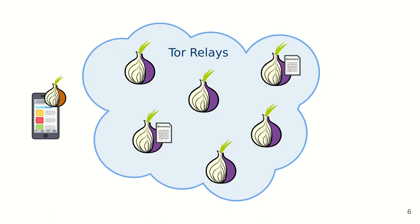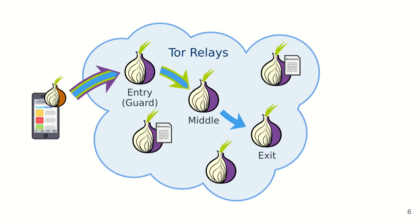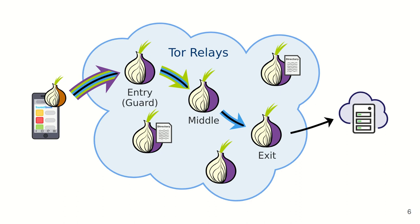When a client running a Tor proxy connects to the Tor network, it builds multi-hop circuits through relays on the network. As Tor usually uses three-hop circuits, the relays are named the entry, middle, and exit relay given by their position in the circuit. The Tor proxy uses these circuits to tunnel anonymous TCP streams to servers outside of the Tor network. When using Tor, the client's IP address is hidden from the destination server and no individual relay is able to link the client to the destination.